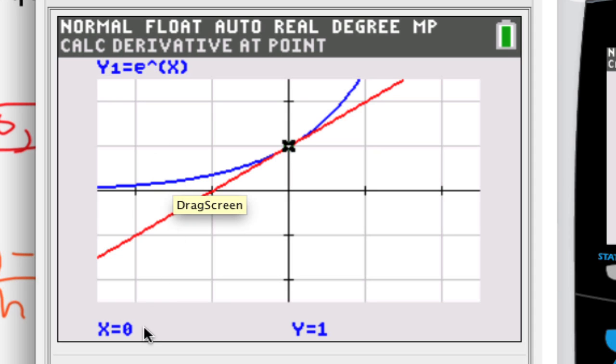I want to find the derivative for the blue line which is the original equation, and I need to find that when the x value is 0. We see here it's already at 0, so I just press the enter key, and we see that that slope comes out to be approximately 1 here. We see it's a little bit over 1.